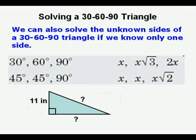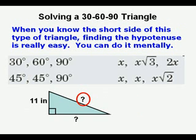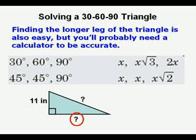We can also solve the unknown sides of a 30-60-90 triangle if we know only one side. And here we have the short side of this right triangle of 11 inches. When you know the short side of this type of triangle, finding the hypotenuse is really easy. You can do it mentally. Finding the longer leg of the triangle is also easy, but you'll probably need a calculator to be accurate.